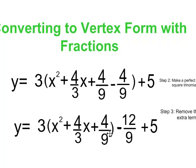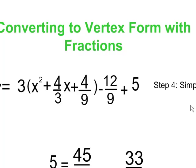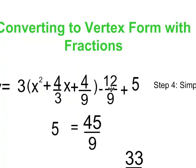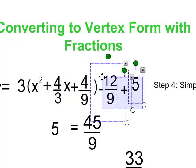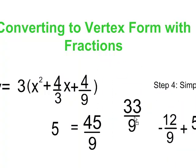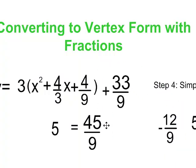For step 4, I'm just going to simplify this a little bit. Negative 12/9 plus 5, and of course 5 is equal to 45/9. And negative 12/9 plus 5 is equal to 33/9. So there's my simplified trinomial.